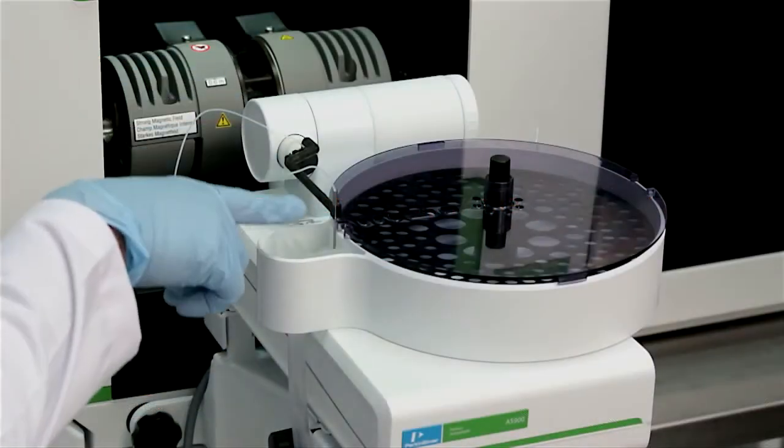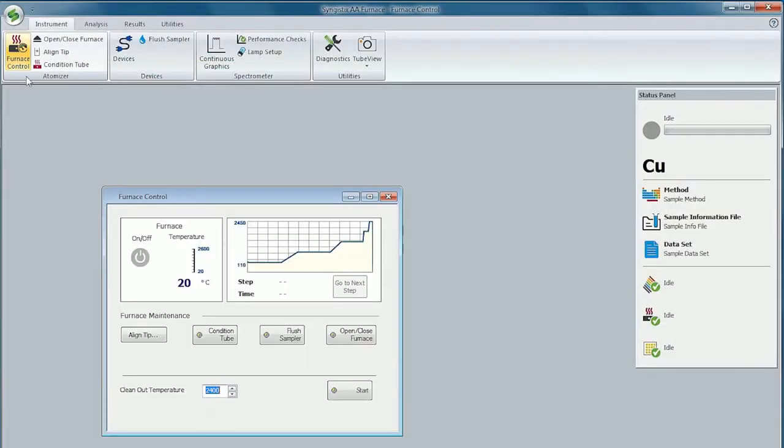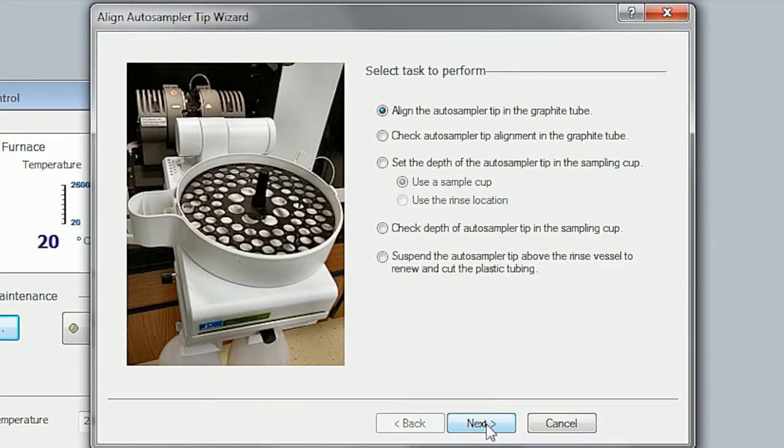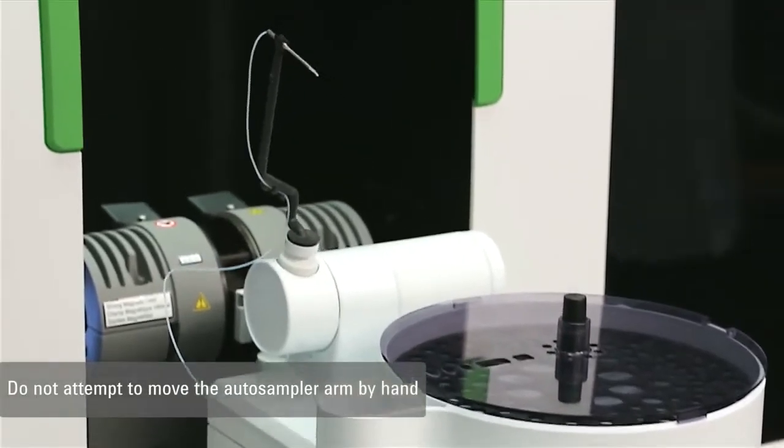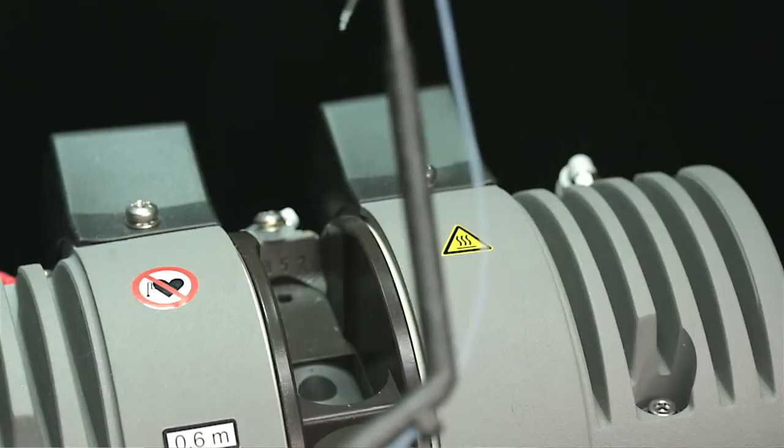This procedure checks that the auto sampler tip is aligned with the injection hole. Click align tip in the furnace control window to bring up the align auto sampler tip wizard, then select align the auto sampler tip in the graphite tube. The auto sampler arm is unlocked and the pipette tip is moved directly above the graphite tube.